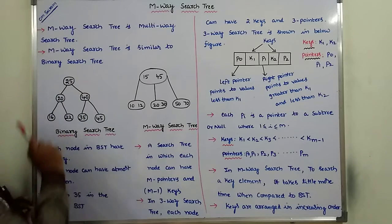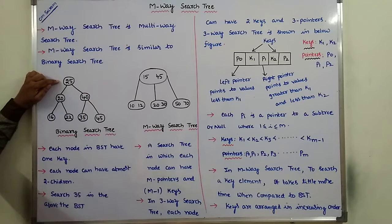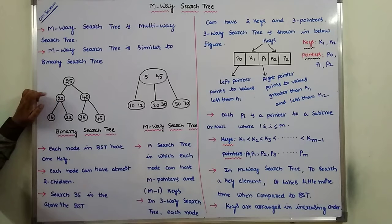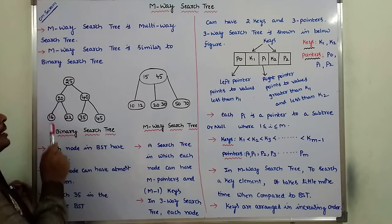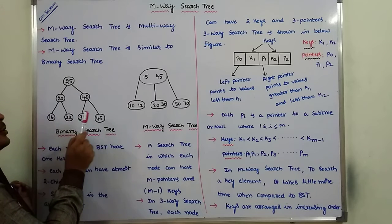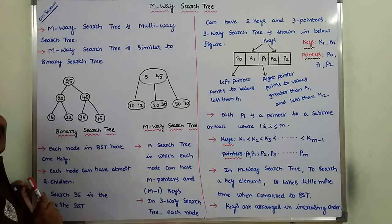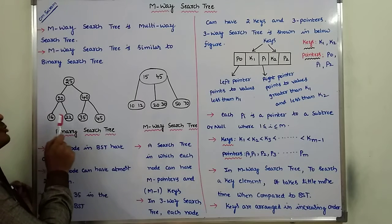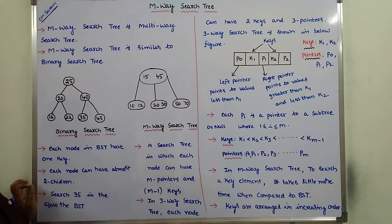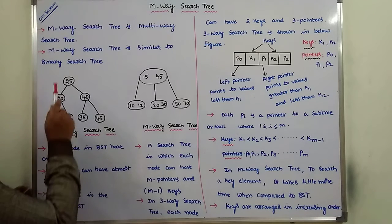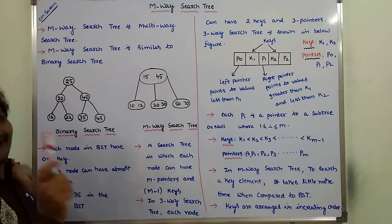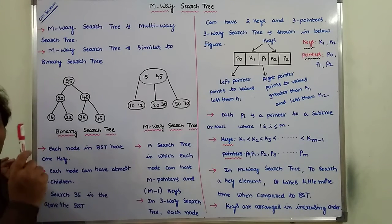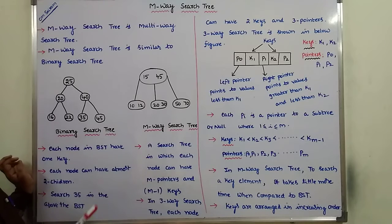This node contains only one key element, that is 25. This node contains only one key element, that is 20. This node contains only one key element, that is 40. In the same way, this node, this node, and this node contains only one single key element such as 16, 22, 35, 45 respectively. Each and every node can have at most two children in the Binary Search Tree.